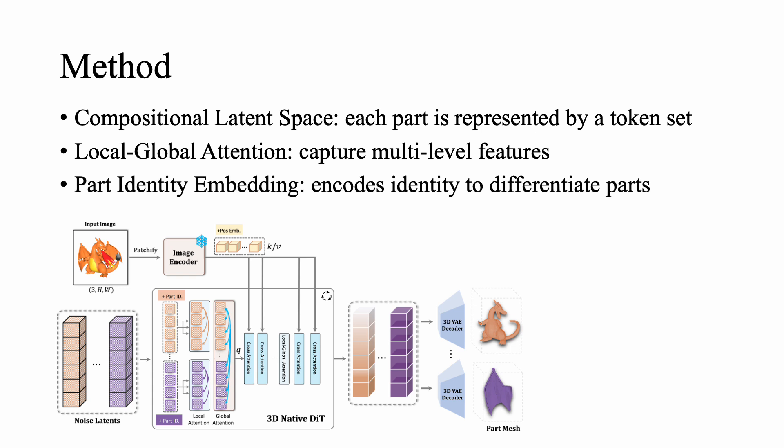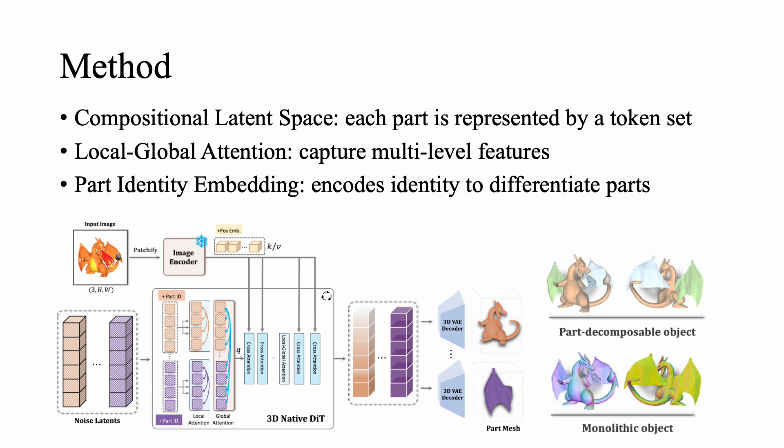We introduce a part identity embedding to help the model distinguish between different parts during generation. Together, these components enable efficient and coherent structured 3D mesh synthesis for both 3D part-composed object and 3D object-composed scene generation.